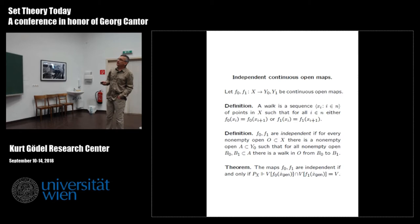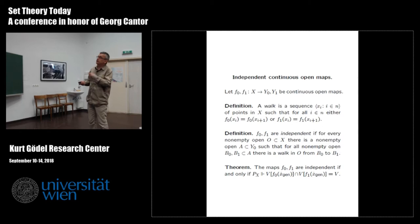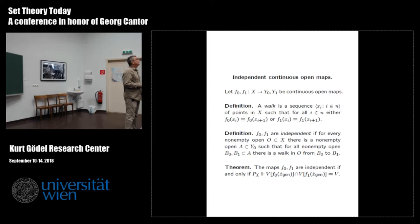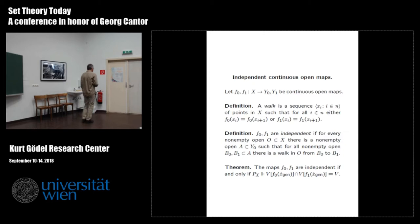Though the definition looks asymmetric, it is in fact symmetric. The key theorem is: for continuous open maps, F0 and F1 are independent if and only if P_X forces that the two generic extensions V[F0(generic)] and V[F1(generic)] have trivial intersection. This is essentially Greg Hjorth's turbulence, recast in geometric language — everyone will immediately recognize turbulence in this formulation.